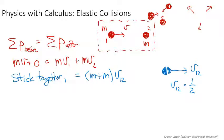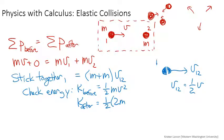Let's check the energy, kinetic energy. K before was one half mv squared. K afterwards is one half, now there's two m's stuck together, and they have one half v squared, that's their final velocity.